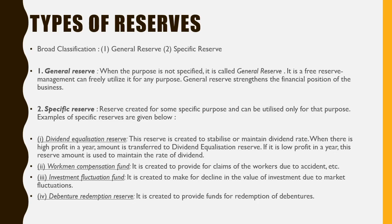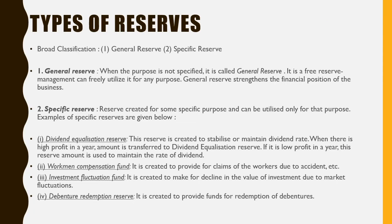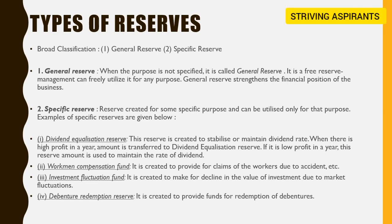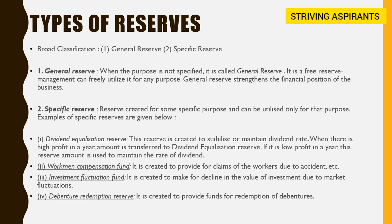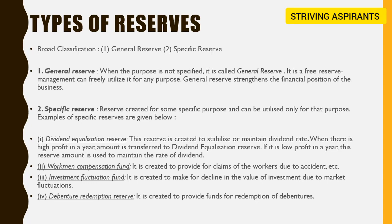The third specific reserve is the investment fluctuation fund. This is created to balance the value of investments — in the market there will be fluctuations in investment value, and to maintain or balance these fluctuations, we create this fund. This amount is utilized to balance and get rid of fluctuations happening in the market. The fourth is the debenture redemption reserve, which is created to provide funds for redemption of debentures.